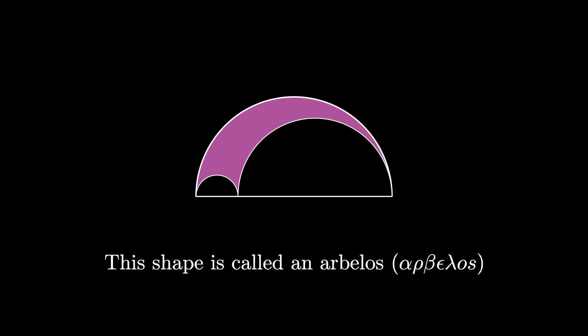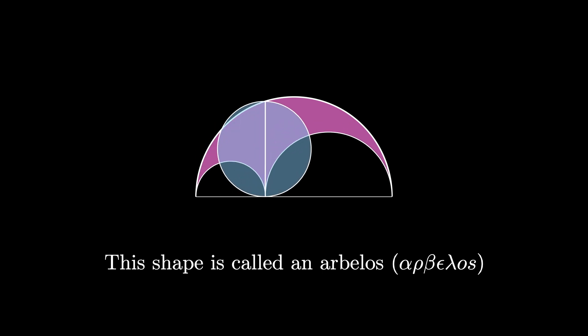Here's an amazing theorem about the area of the arbelos. Consider the semicord from the tangent point of the circles to the larger semicircle and consider this circle that has that semicord as its diameter.